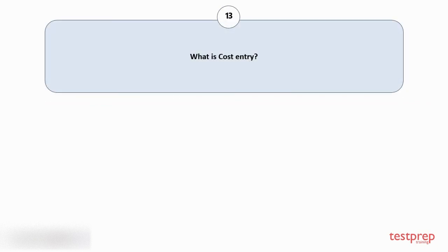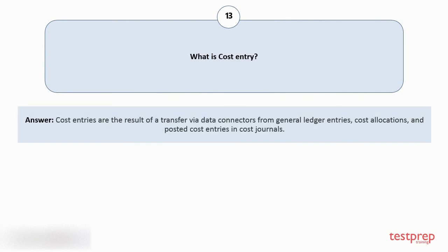Question number 13: What is cost entry? Cost entries are the result of a transfer via data connectors from general ledger entries, cost allocations, and posted cost entries in cost journals.